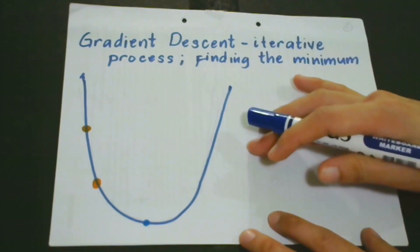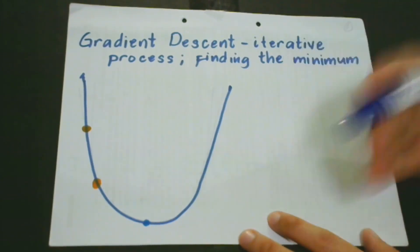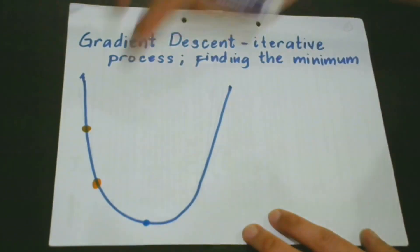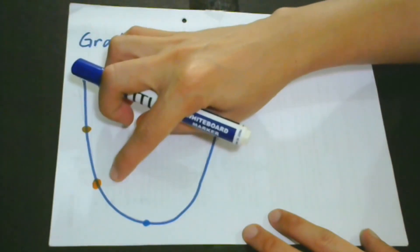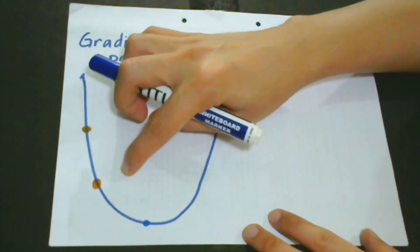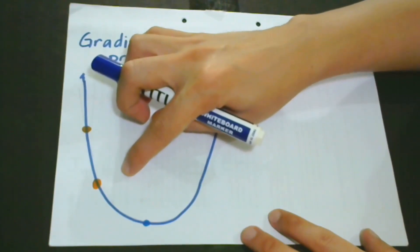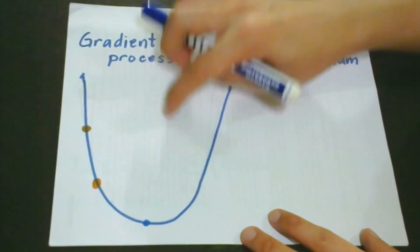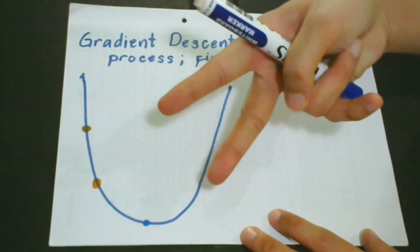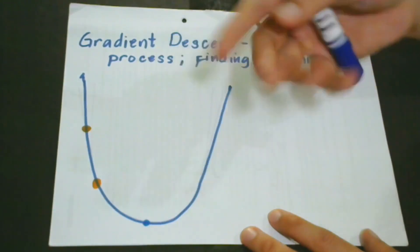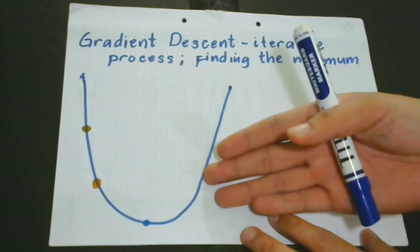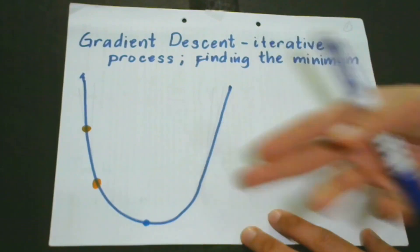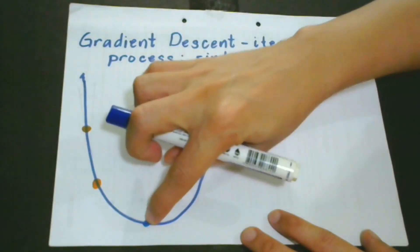Let's look at this illustration for a better understanding. In this illustration, we can see two points. Our goal is to reach the minimum. We have to consider two things: first, which way to go; and second, how big or how small our step should be to reach this point.